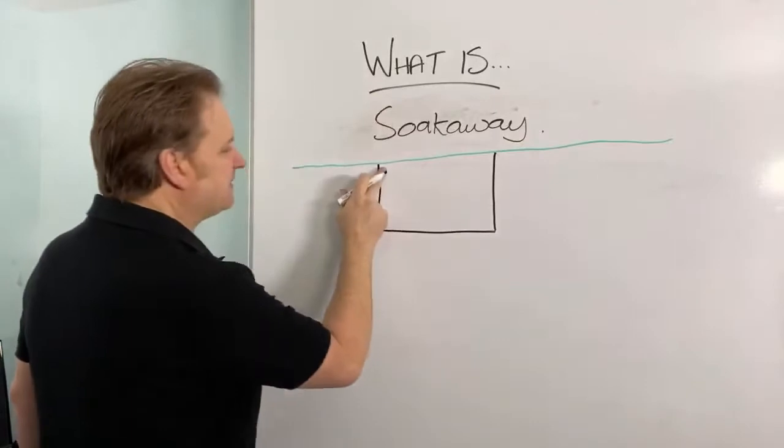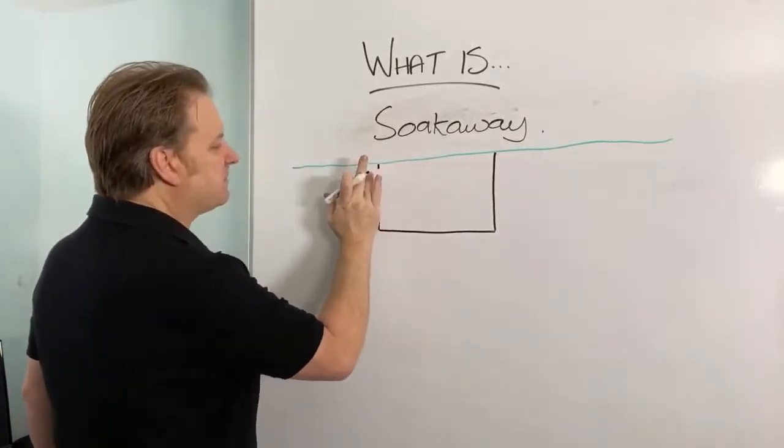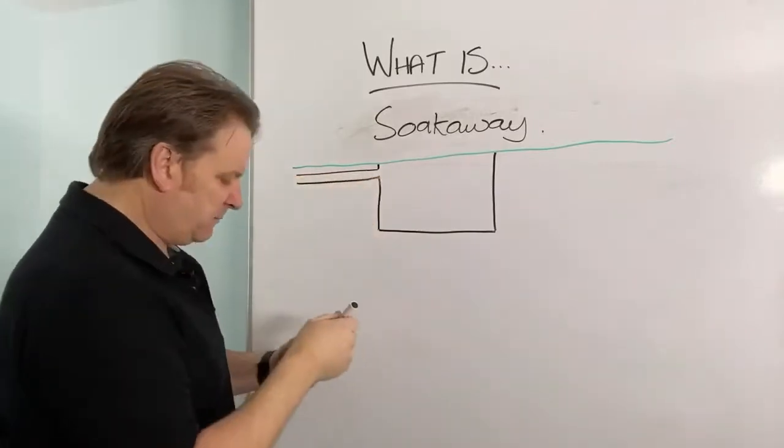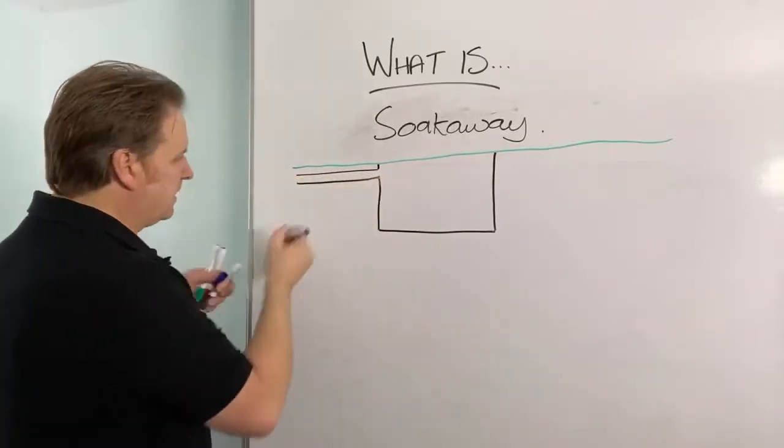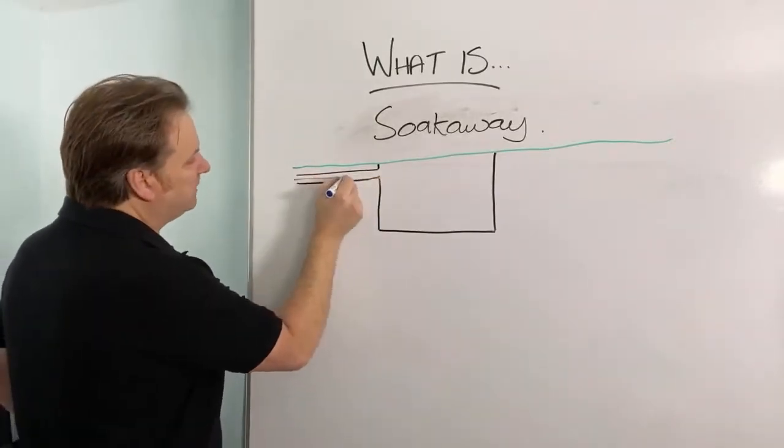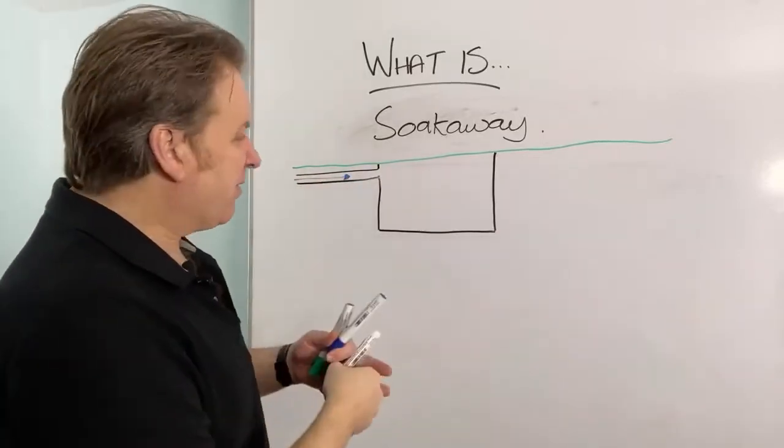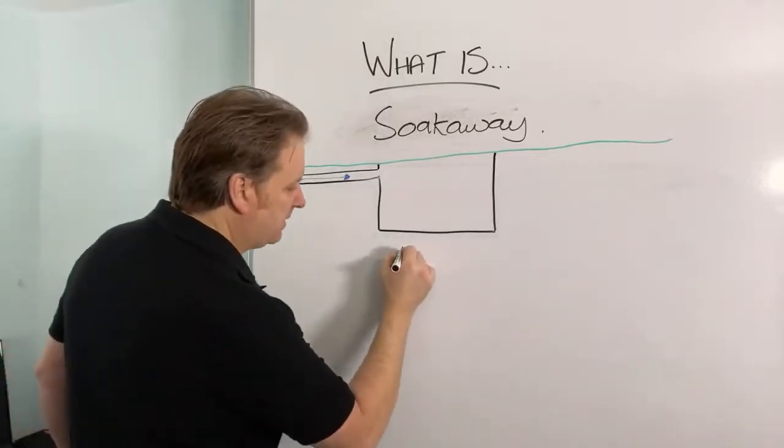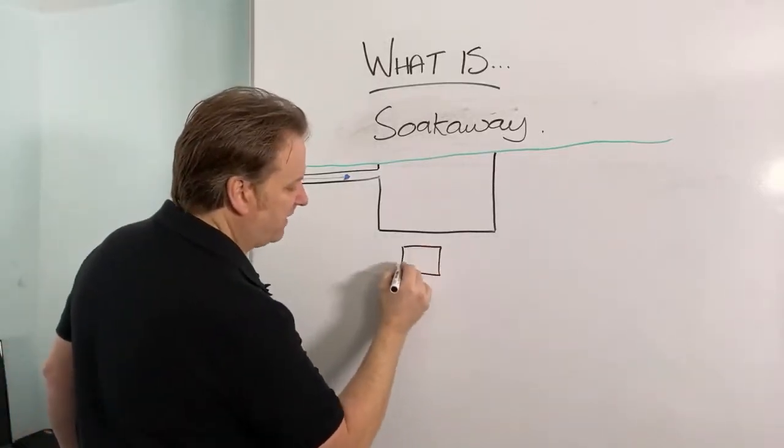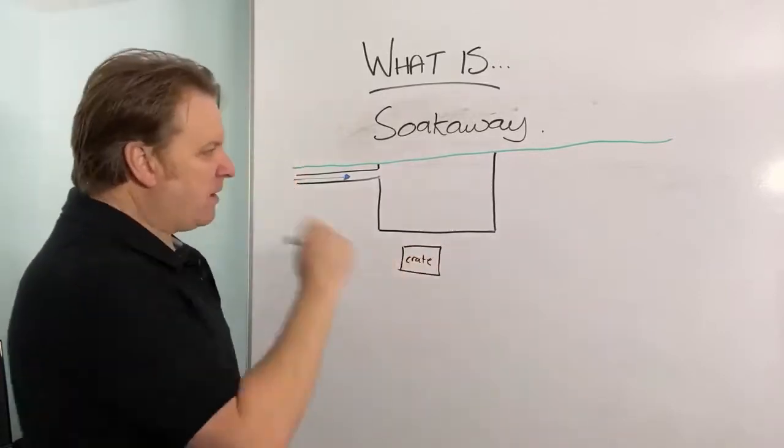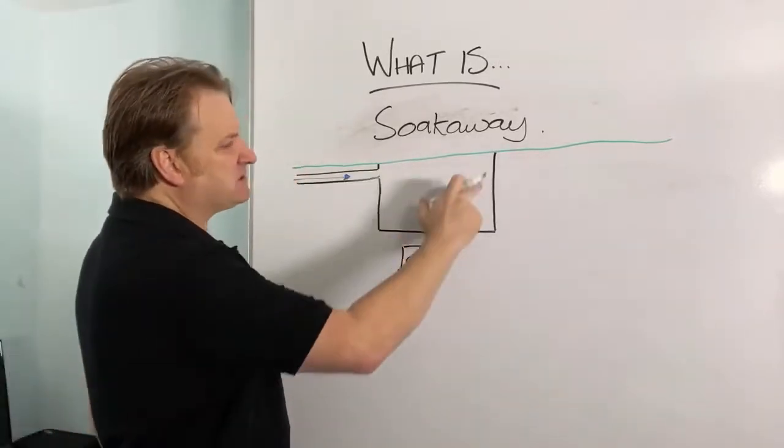So one last thing I want to show you which is very, very popular. For me, this is the best type of soak away product. Let me show you this. They're called septic tank soak away crates. Septic tank soak away crates. Let me show you this. So again, that's your pipe coming in to your soak away. So you've got your water coming in here, from your septic tank. Now a soak away crate looks like a milk crate.